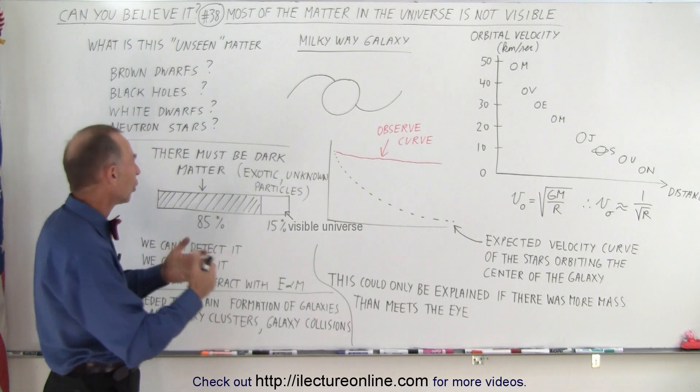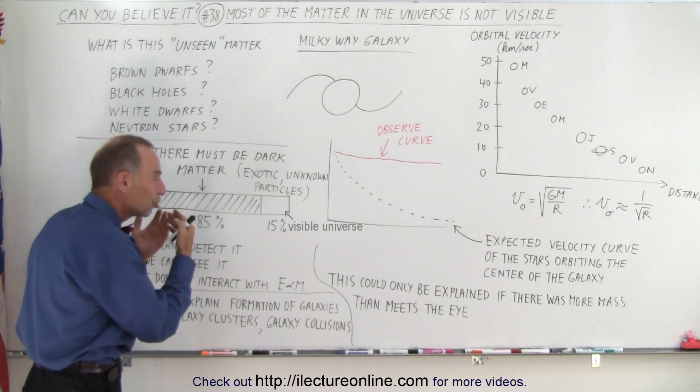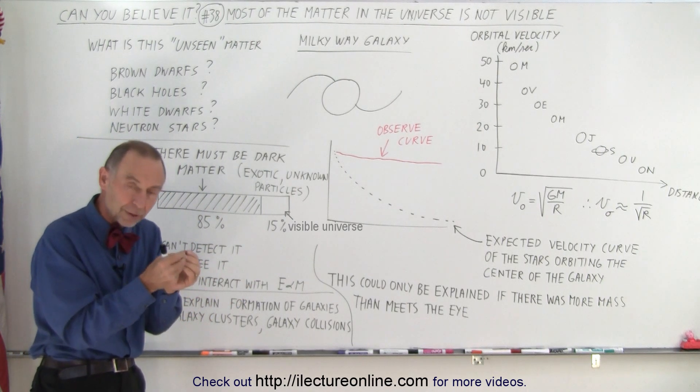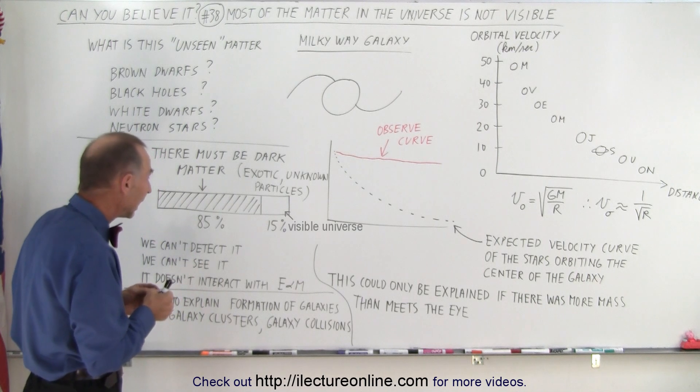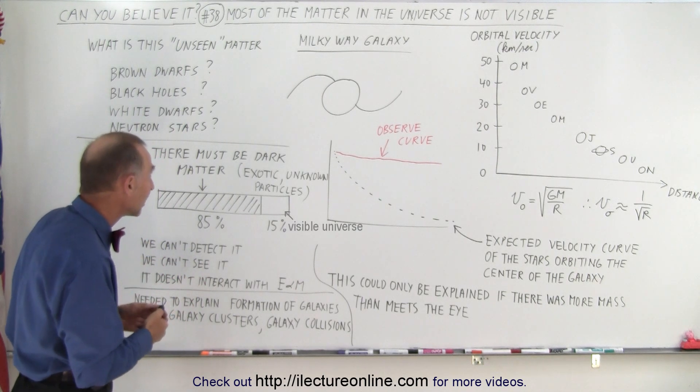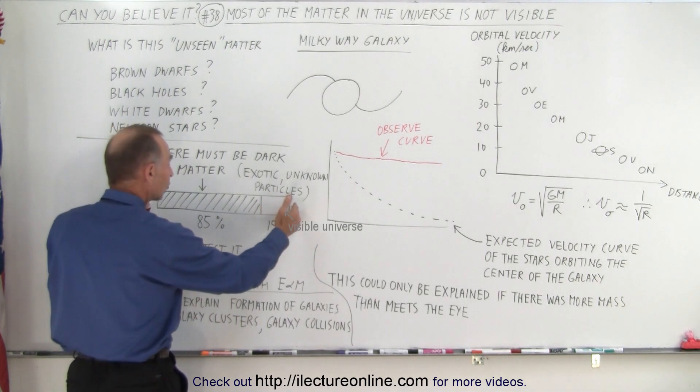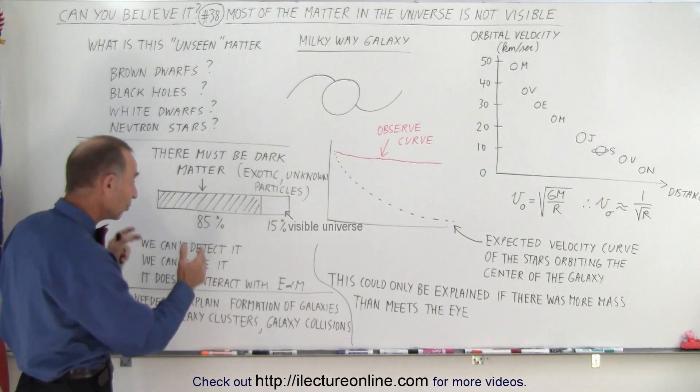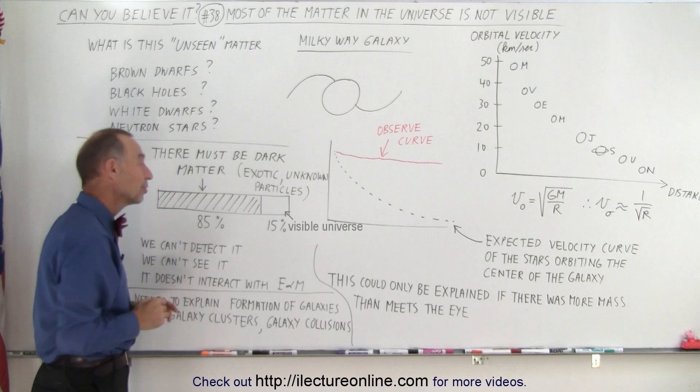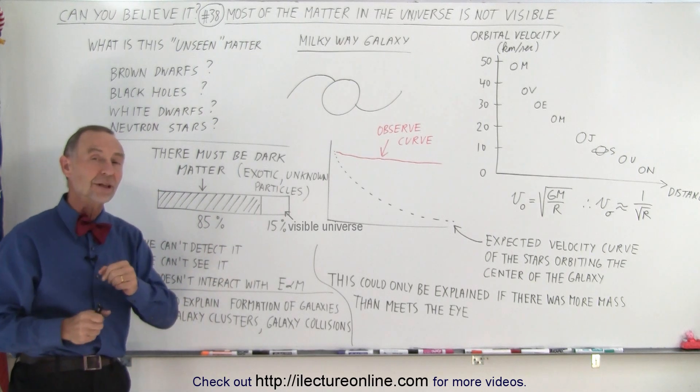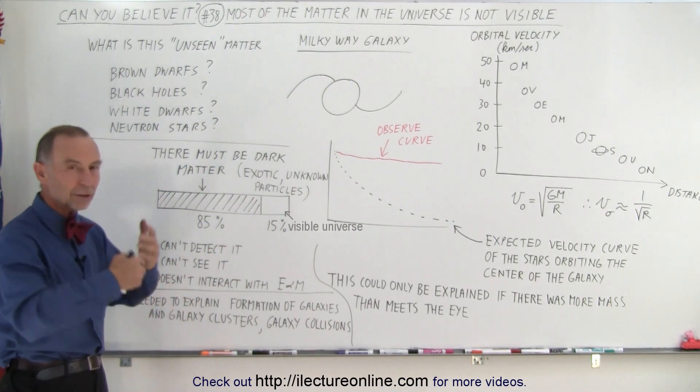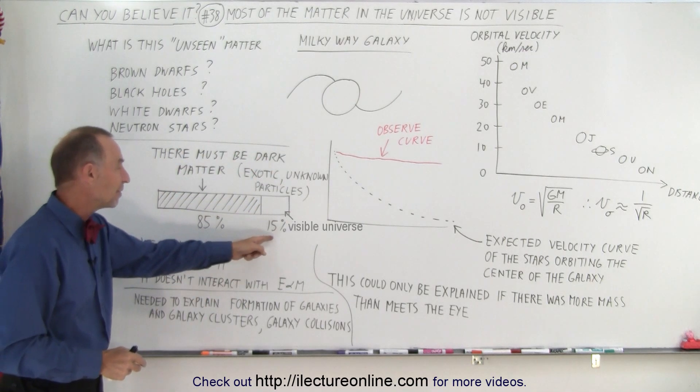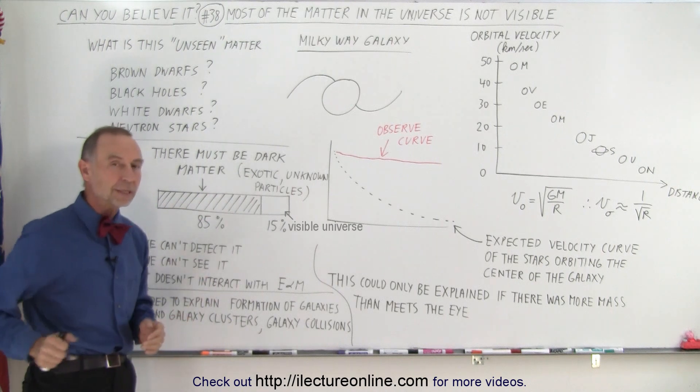So, we call it dark matter, it must be there. They're exotic unknown particles, we don't know what they're made out of, we don't know what subatomic particles they're made out of. And it turns out that we estimate that of all the matter that exists, about 85%, which is the vast majority of it, appears to be dark matter, with only about 15% of what's left. All the stars and the nebulas and the planets, everything else out there that we can observe, only make up about 15% of the mass that must be there.